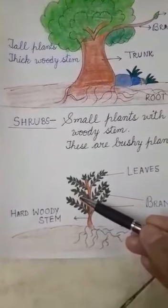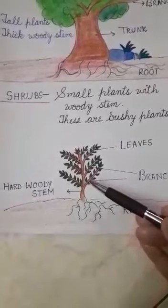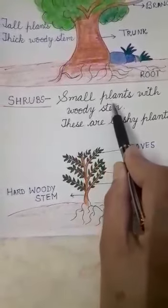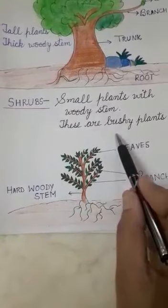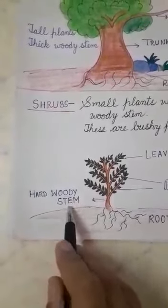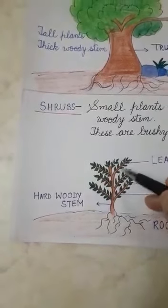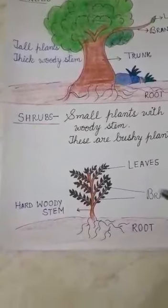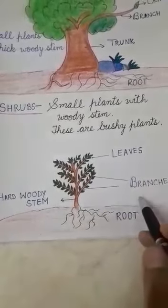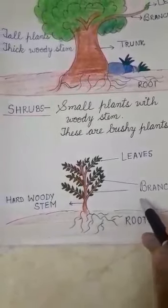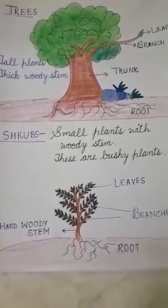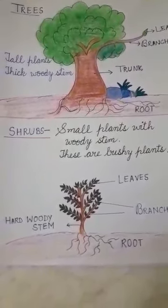The second type is shrubs. A shrub is a small plant with a woody stem. These are bushy plants and they have a hard woody stem. They are not as big as a tree — they are small in size — but they have a hard woody stem. They have many leaves and many branches. Examples of shrubs are rose and mehendi. Examples of trees include the neem tree, peepal tree, banyan tree, and mango tree.